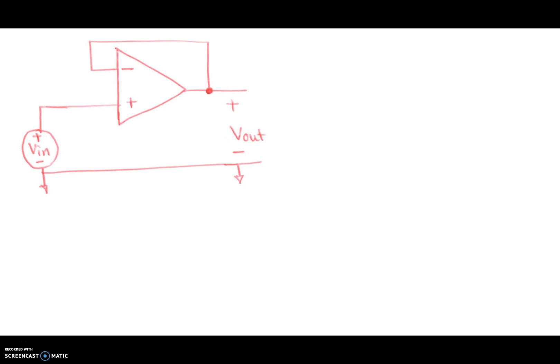So here's an op-amp, no resistors at all. There's a voltage source connected to the non-inverting end, and the negative feedback is on the inverting end. Let's take an analysis of this.